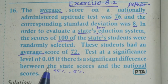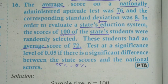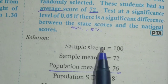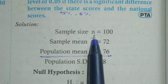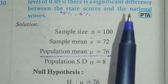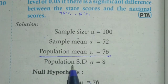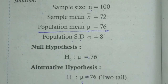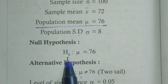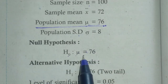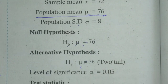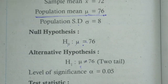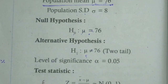The significance level 0.05 corresponds to a 95% confidence level. Now the solution: first, the given values are correct — n=100, sample mean x-bar=72, population mean mu=76, population standard deviation sigma=8. The null hypothesis H0 is mu equals 76, and the alternative hypothesis H1 is mu not equal to 76. The significance level is 0.05.